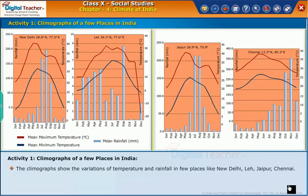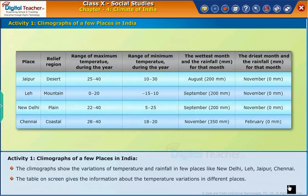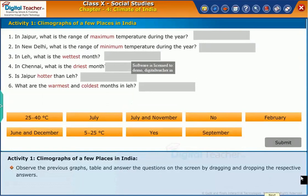The climographs show the variations of temperature and rainfall in a few places like New Delhi, Leh, Jaipur, and Chennai. The table on screen gives the information about the temperature variations in different places. Observe the graphs and table, and answer the questions on the screen by dragging and dropping the respective answers.